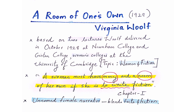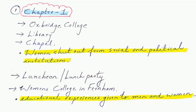Woolf also uses a narrative technique throughout this essay — she talks to us as if she is telling us a story. In that story, you find a lot of experiences, some of which might be true and some might not be true. So it is like storytelling; there is fact and fiction mixed together in the essay.